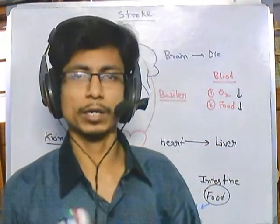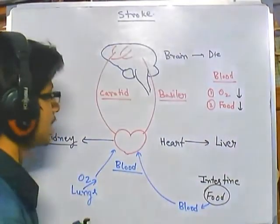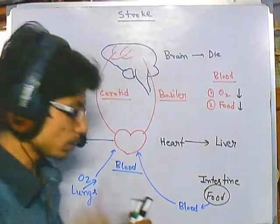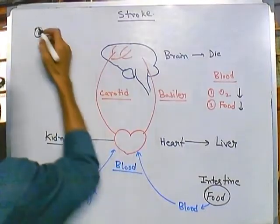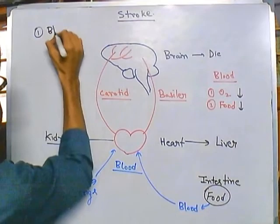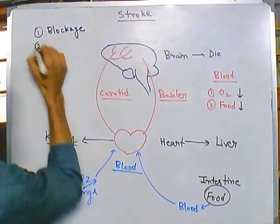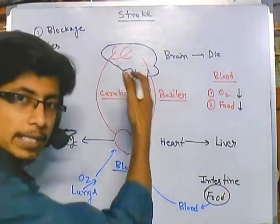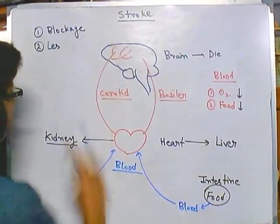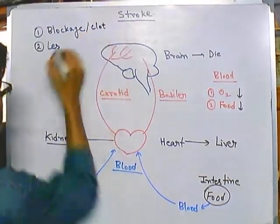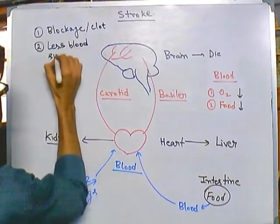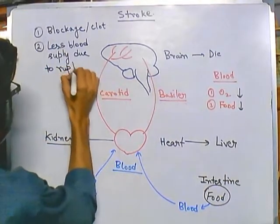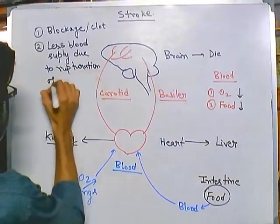There are two different major ways of cutting the blood supply from heart to the brain. One is any kind of blockage of blood supply, and the second is any kind of leakage or loss. The first is any kind of blockage due to formation of a clot, and the second is less blood supply due to any kind of mechanical shearing or rupture of the blood vessel.